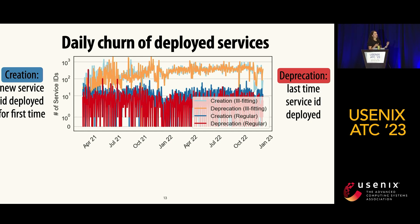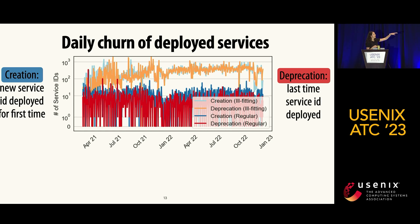When I add deprecation rates — the last time a service is ever seen over the 22 months — the inference platform hovers around the same rate, meaning services are created and deprecated at similar rates. Regular services are also deprecated, but at a slightly lower rate than they are created.